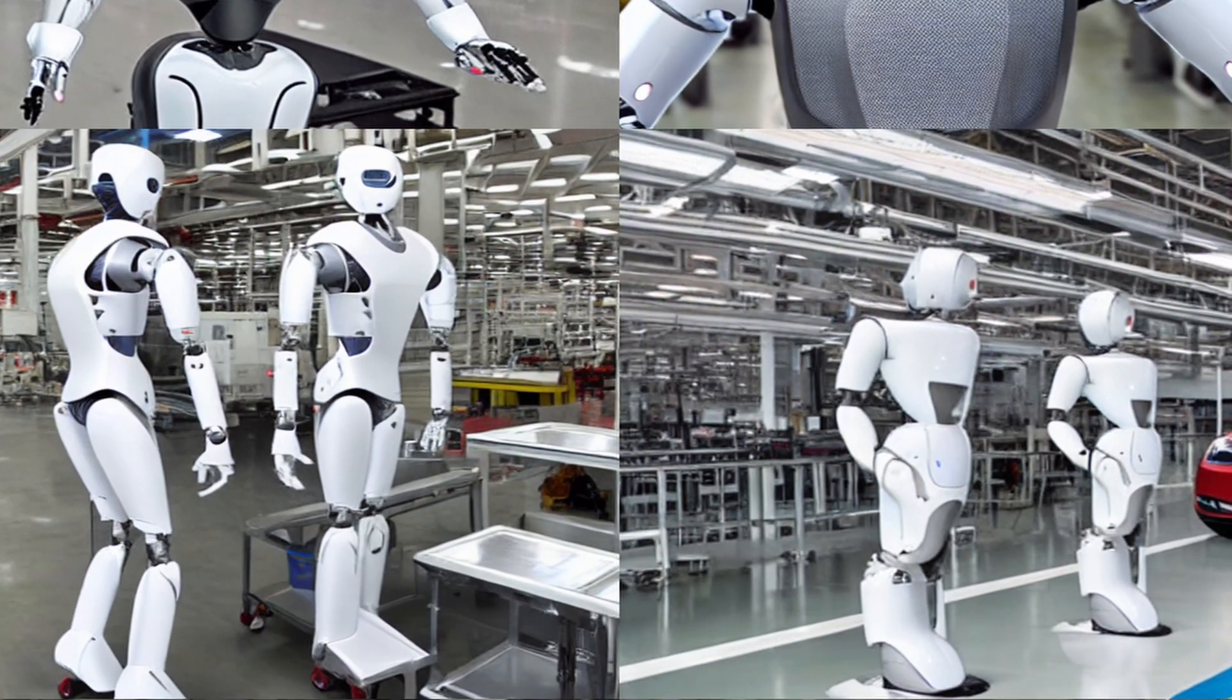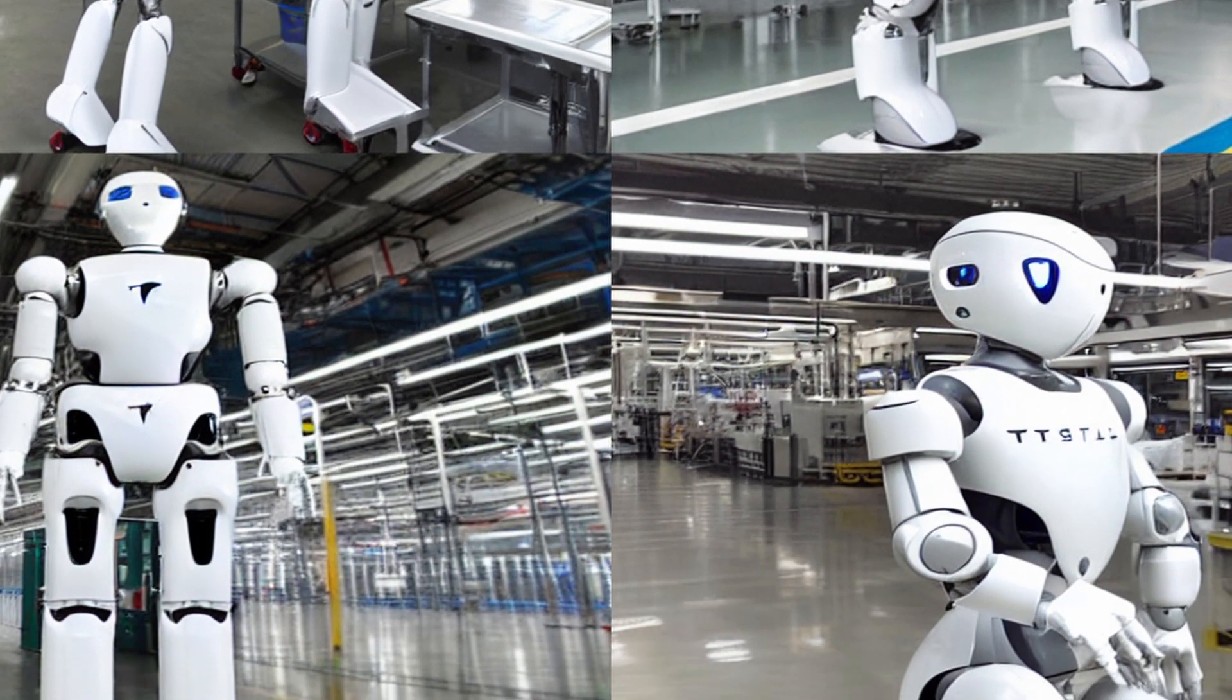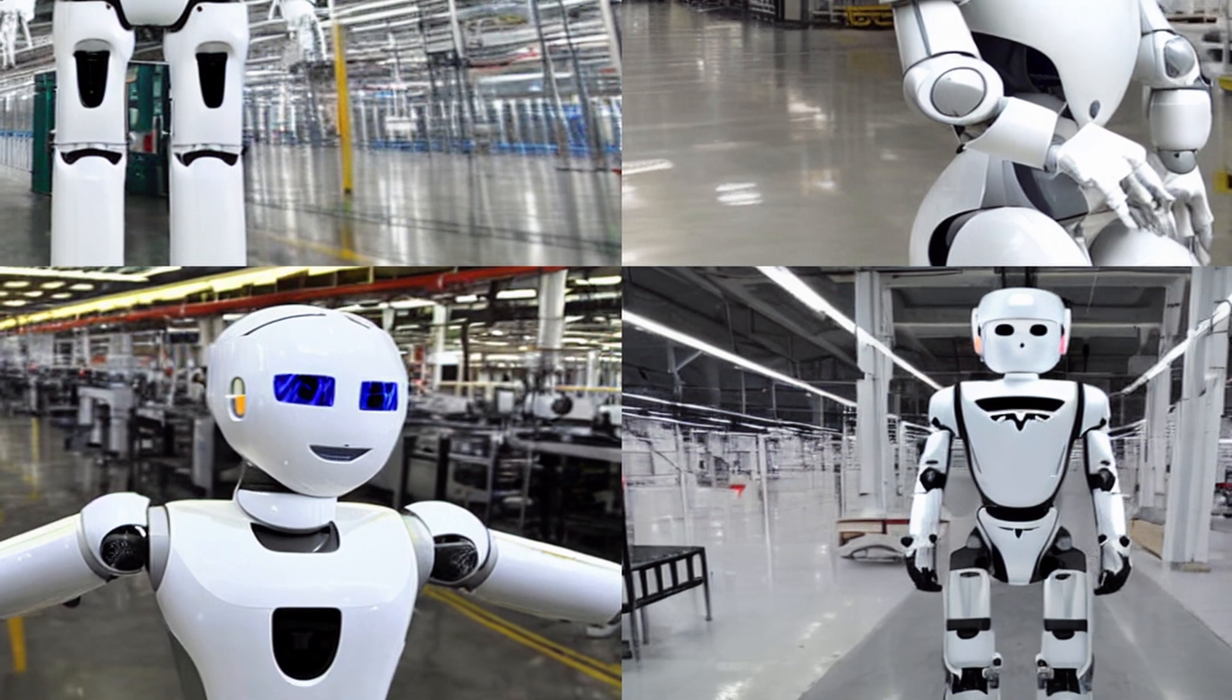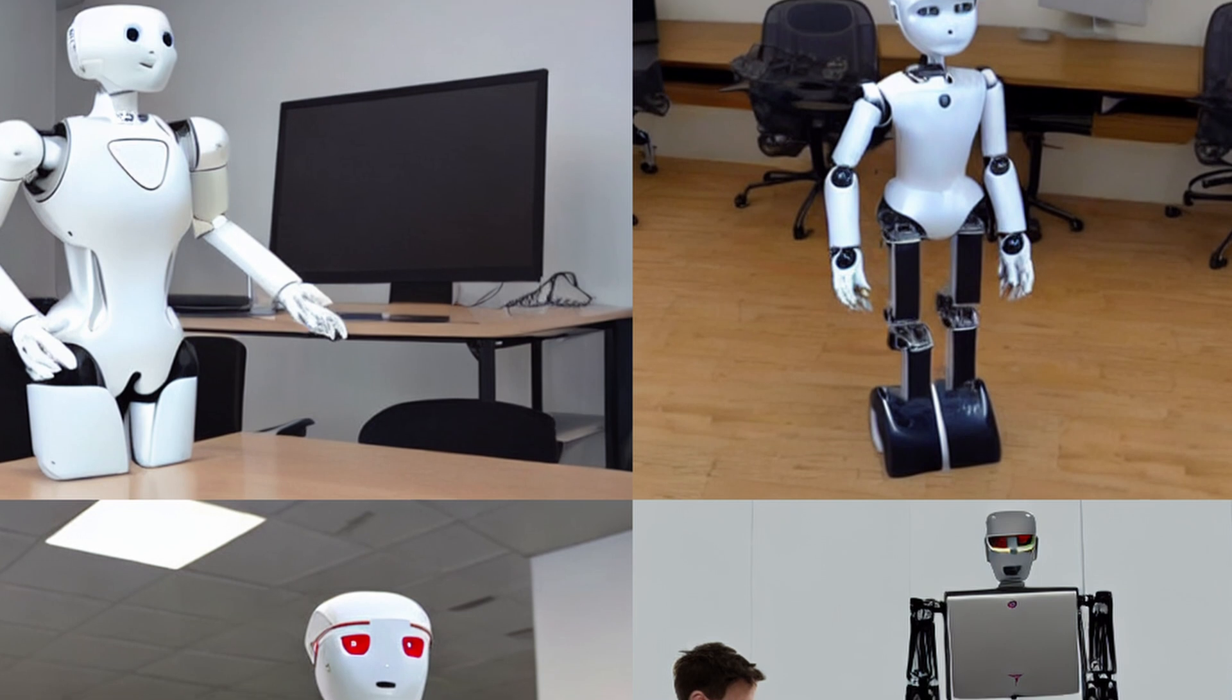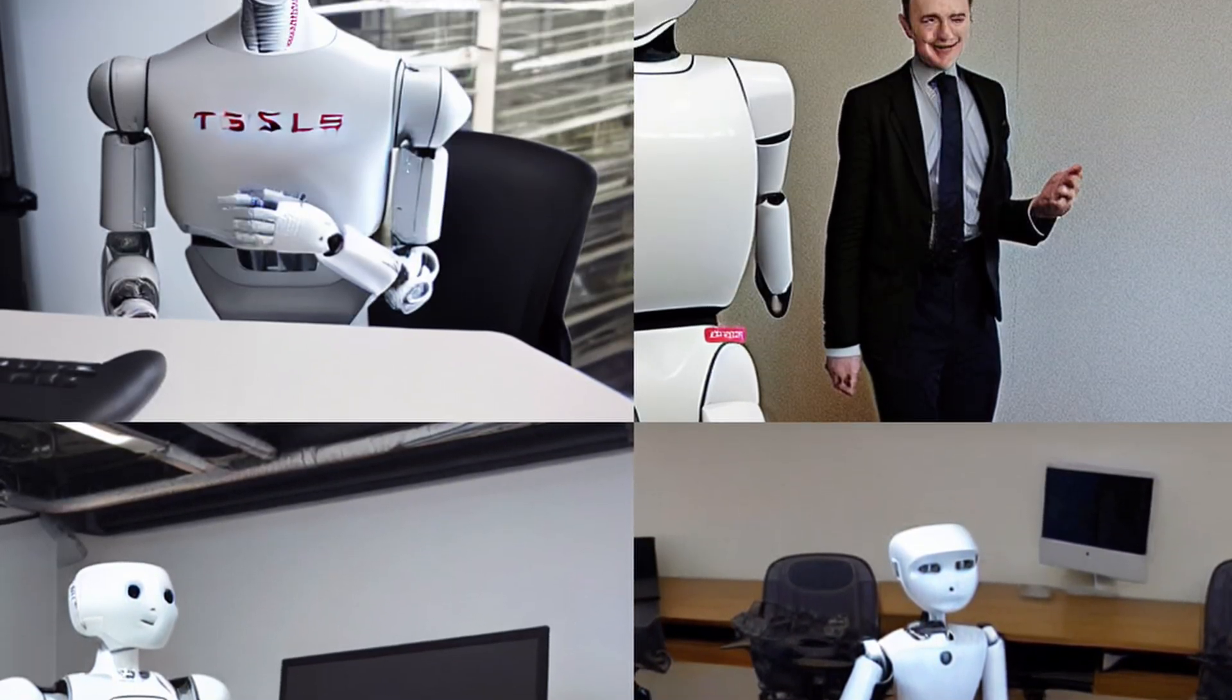As if Tesla isn't busy enough creating fully self-driving cars or cars with half-year waitlists, CEO Elon Musk says there should be a prototype for the Tesla humanoid robot sometime in 2023. This doesn't seem like a lot of certainty, and history has shown that it's not wise to heavily rely on Tesla's or Elon Musk's timelines.